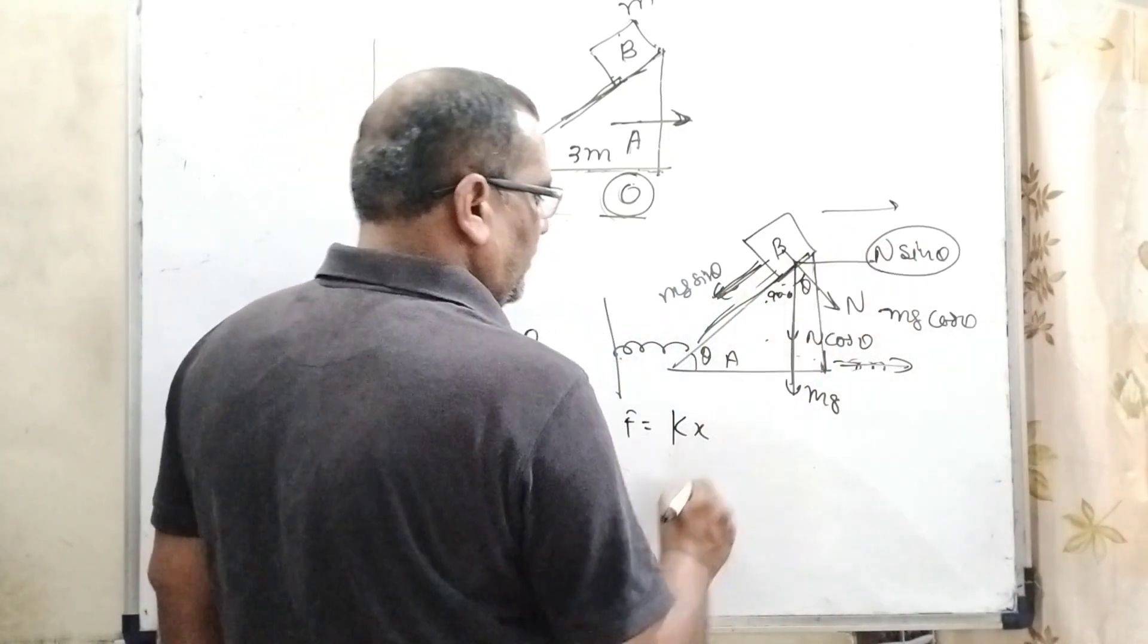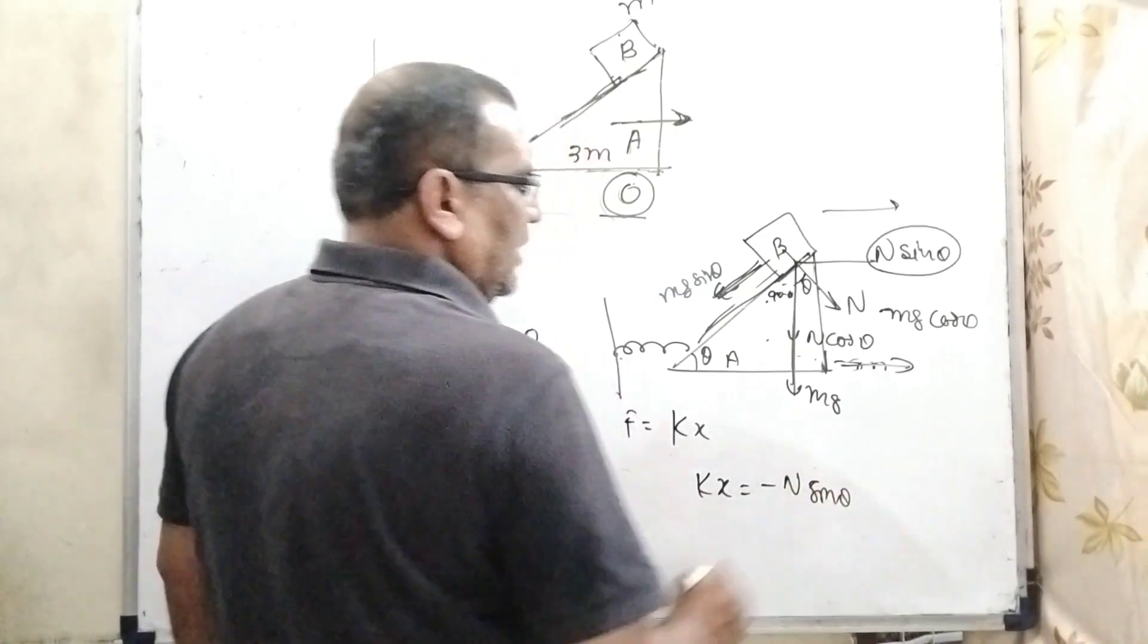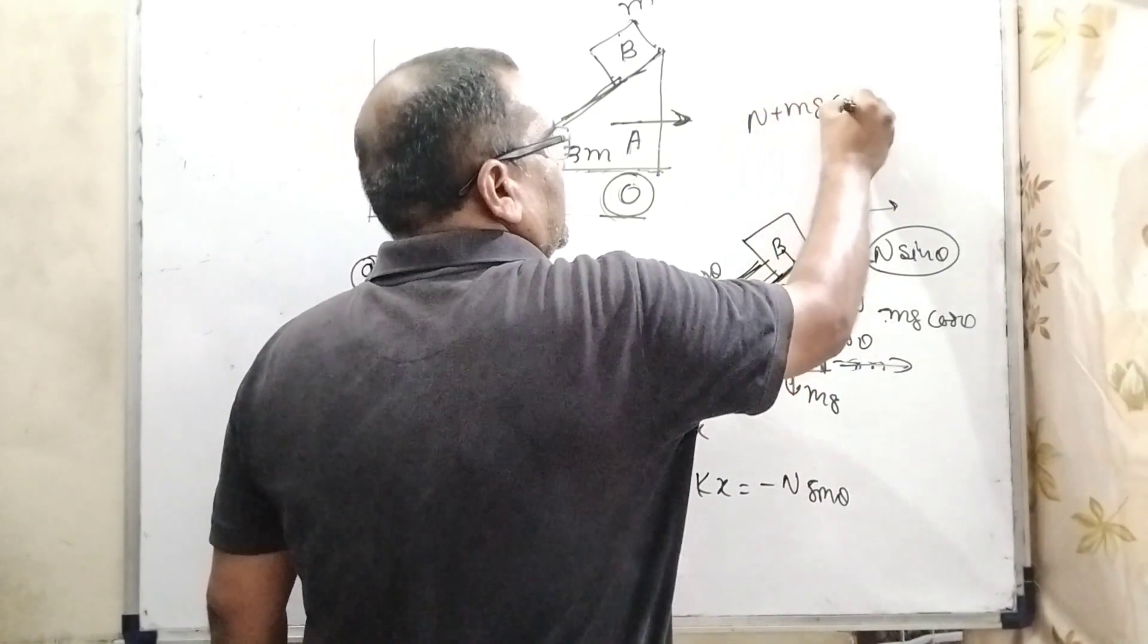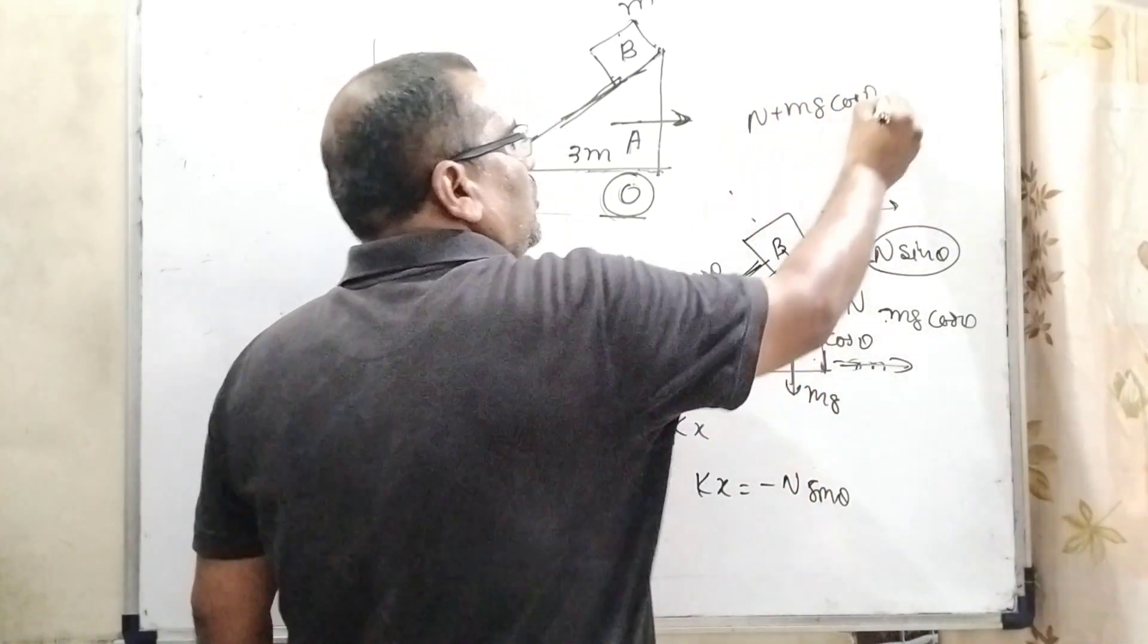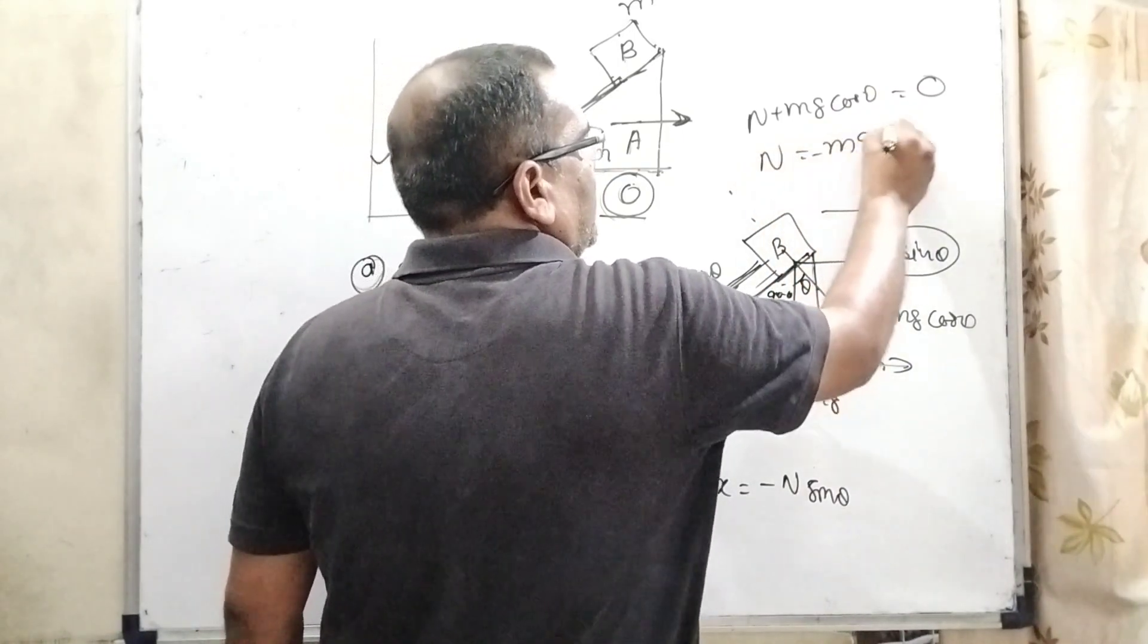So therefore, F equals Kx. This equals N sin theta, and its direction is opposite. So therefore, Kx equals minus N sin theta. But here, N plus Mg cos theta. Upside, there is no force, so therefore zero. Then N equals minus Mg cos theta.